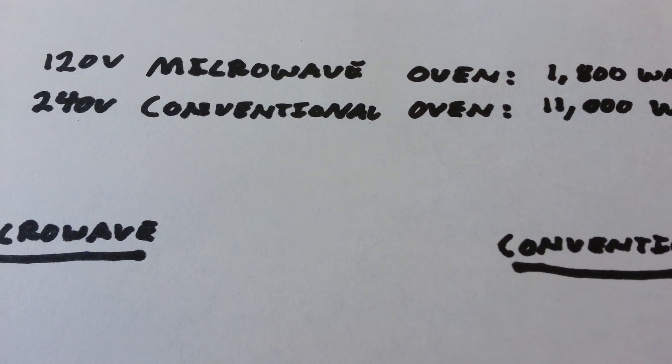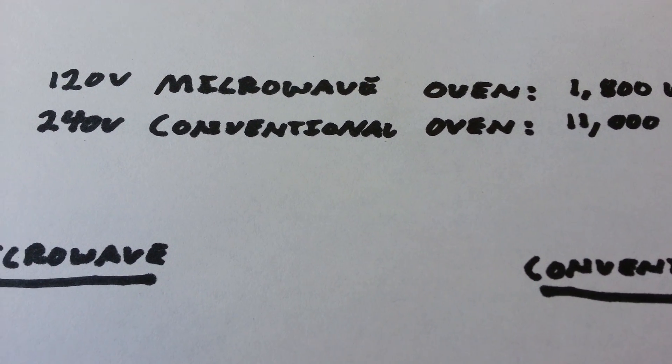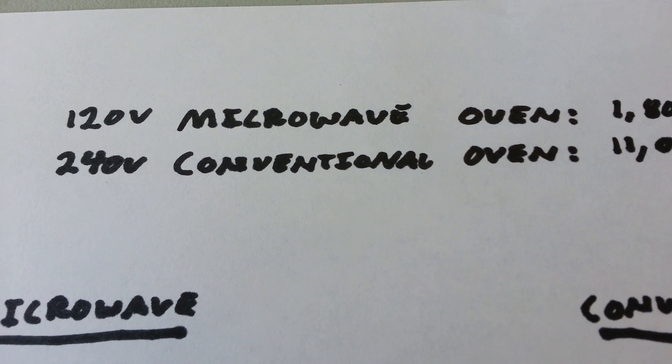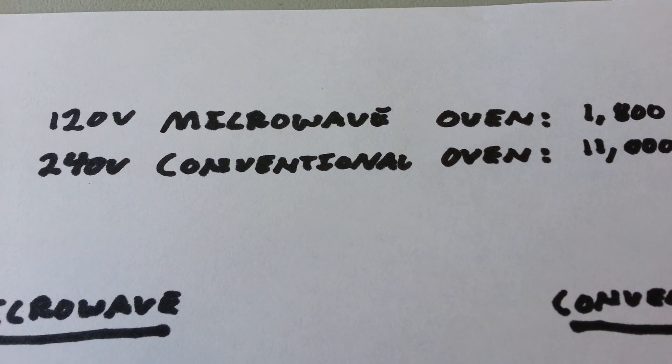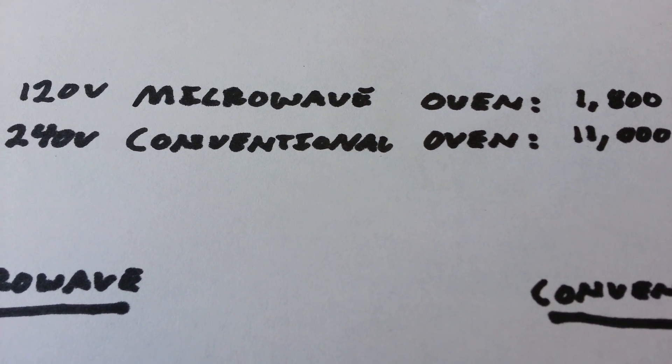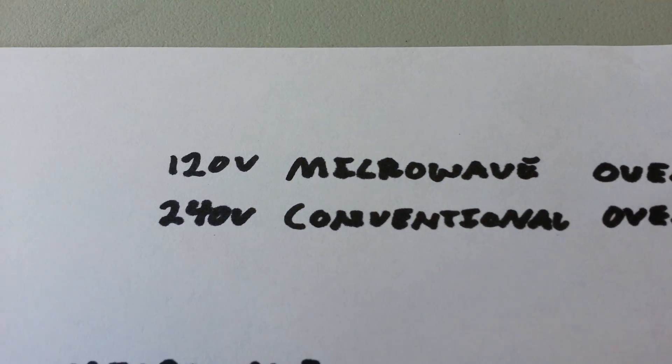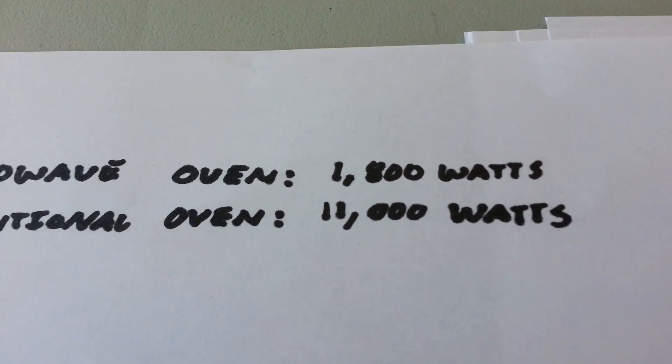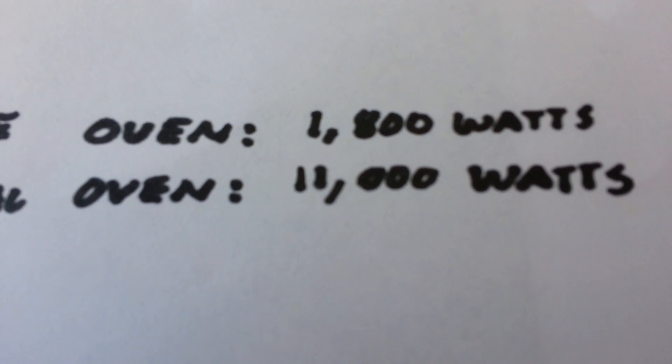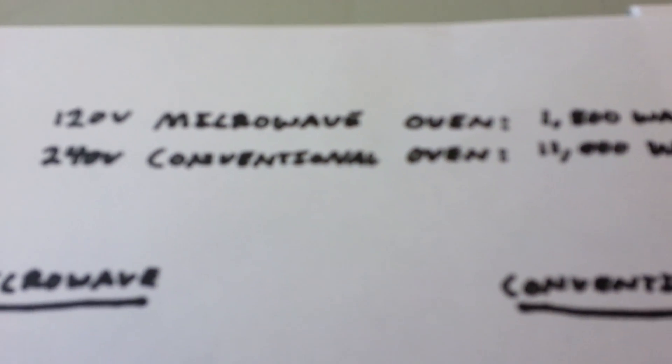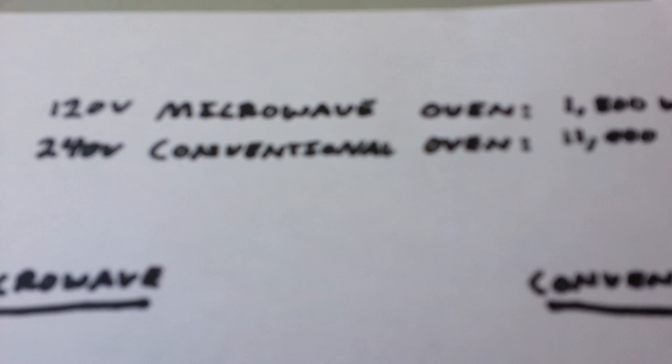When dealing with appliances, there will always be a nameplate on the appliance. In this video, we're given the example of a 120 volt microwave and a 240 volt conventional oven. On the nameplate, it will always tell you the voltage and the wattage of the equipment. So the purpose of this video is to explain how to take that and determine the amperage that you need for your overcurrent protection.